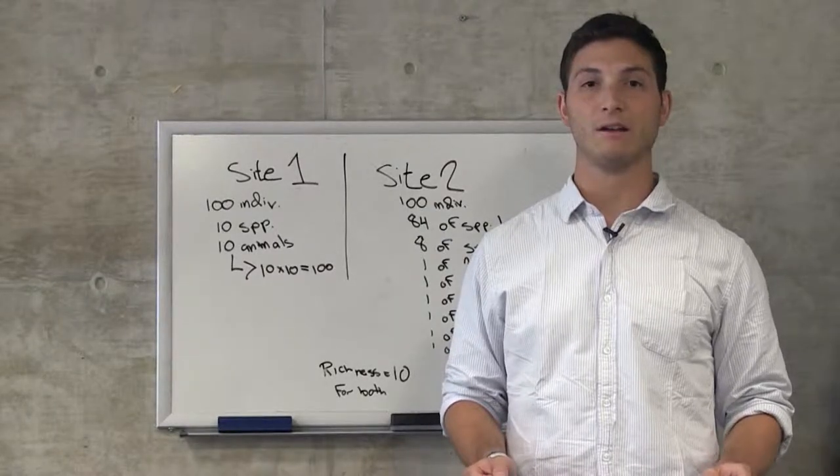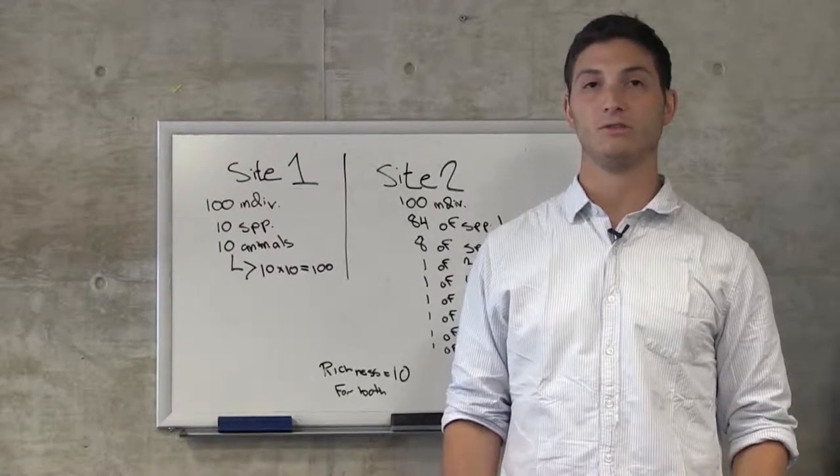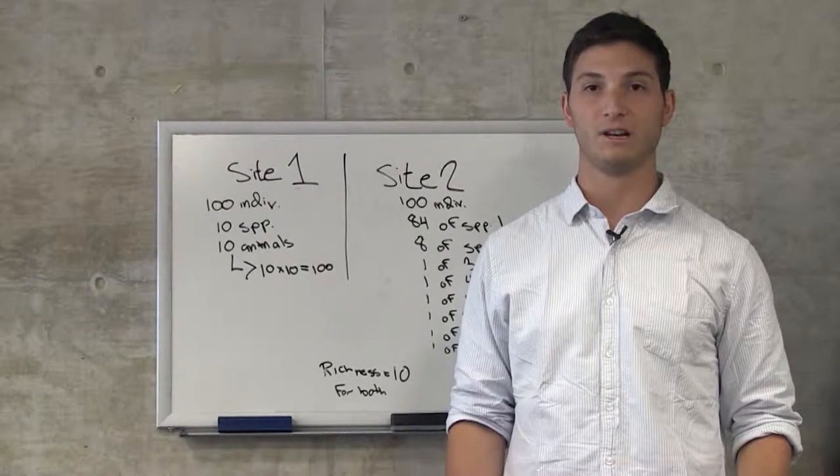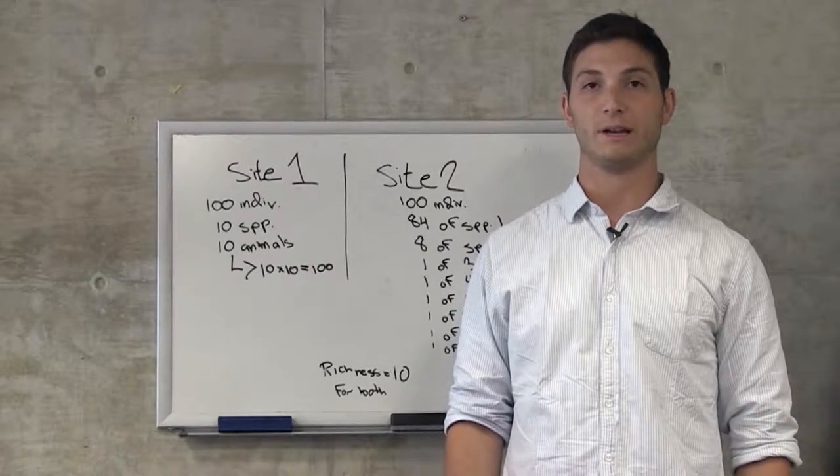The actual numbers that we calculate here have real little meaning. Having said that, one index that's been traditionally used to measure diversity is the Shannon-Weiner index. This index takes both species richness and species evenness into account.